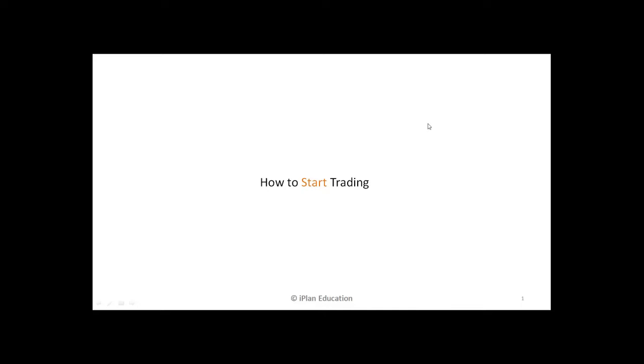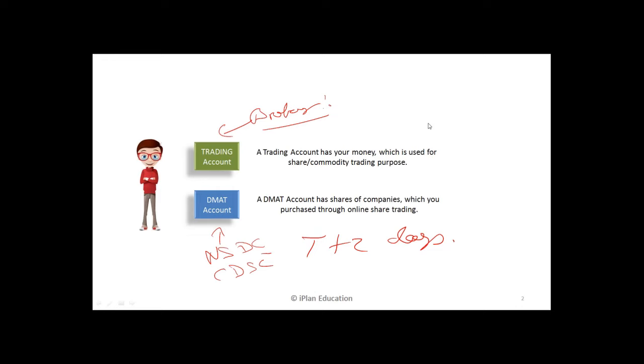So you have bought an IPO. If you have bought an IPO, you already will have a DMAT account, obviously. Normally you need to approach a broker and tell them that I want to trade online, so open my trading account. So they will open a trading account and along with that they will also open a DMAT account. DMAT account has shares of companies which you purchase through online share trading and trading account has your money which is used for share trading or commodity trading or forex trading purpose. In trading account you transfer money from your bank.